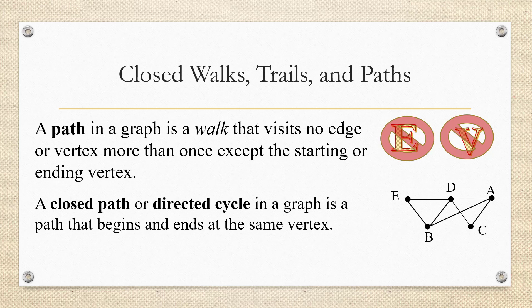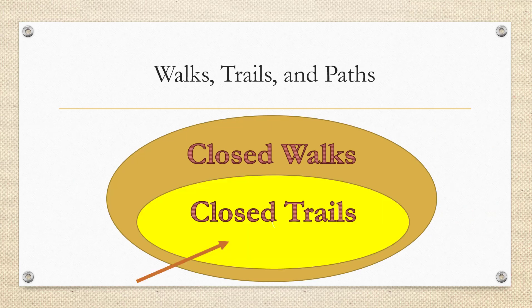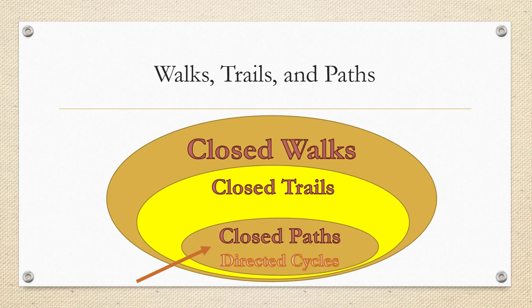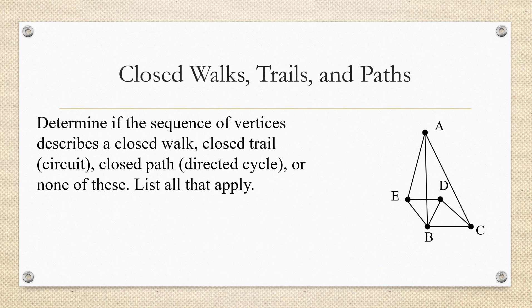If we add the extra condition of having no repeated vertices, we're talking about a path. A closed path is a path that begins and ends at the same vertex — for example, E to B to A to D and back to E, repeating no edge or vertex. So closed walks are the biggest category; closed trails are next and have no repeated edges, often called circuits; and closed paths have neither repeated edges nor repeated vertices, often referred to as directed cycles.